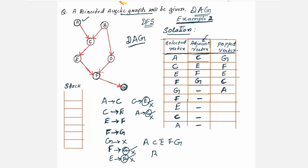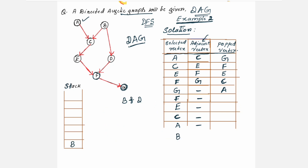But still we have B and D in the graph which are not visited. Hence, the algorithm once again calls topological sorting for the nodes which are not visited. You need to check for B and D. Start again with selected vertex B — first place it in the stack, then select the vertex and check the neighbors for B. B has got C and D. C is already visited; D is not visited. So D is the adjacent vertex for B, and D needs to be placed in the stack also.